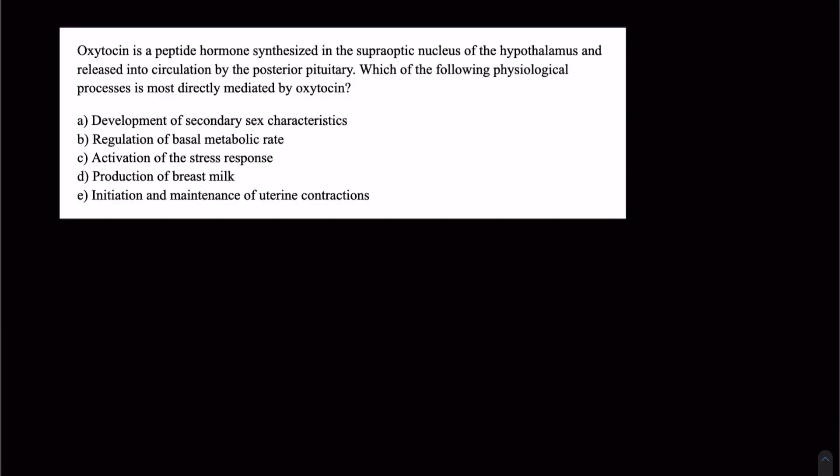Next, let's do a practice question. So pause this video, try it on your own, and then come back to it. So this question is saying that oxytocin is a peptide hormone. Remember, a peptide hormone is just a fancy way to say a protein. So it's going to be made up of amino acids, synthesized in the superoptic nucleus of the hypothalamus.